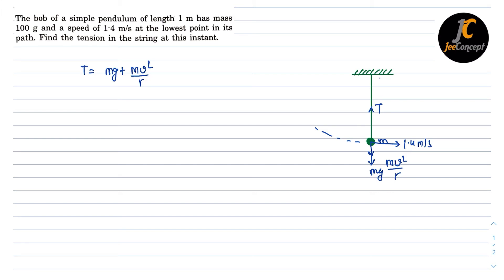The length of the pendulum is 1 meter so that means we will treat it as a radius so r or l is equal to 1 meter. Mass of the bob is 100 gram that means 0.1 kg. The velocity is 1.4 meter per second.